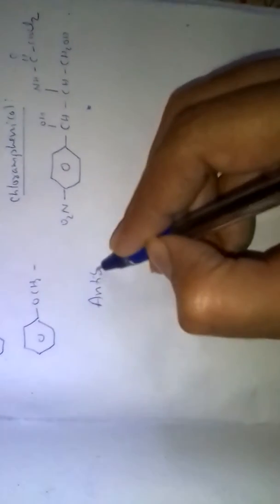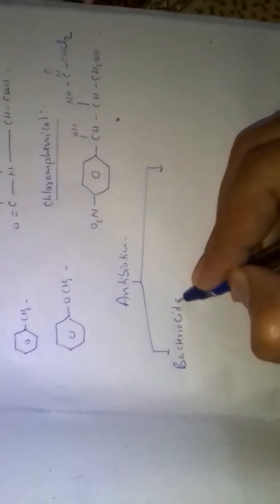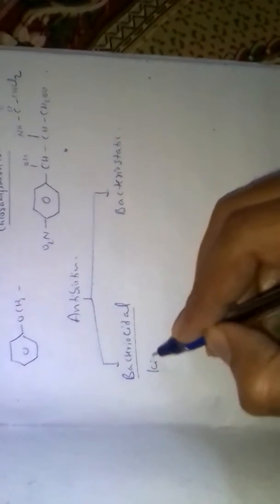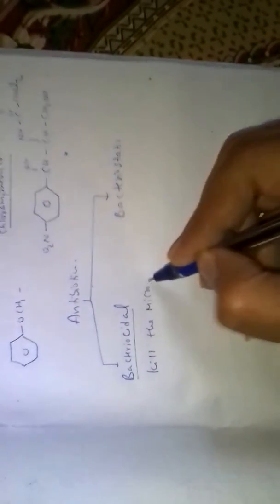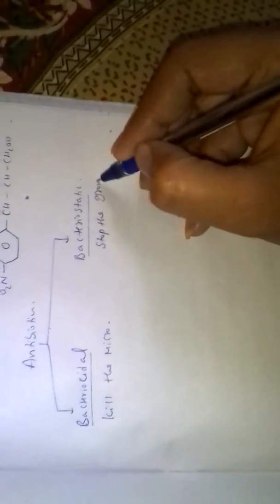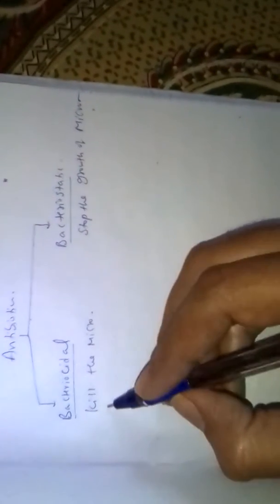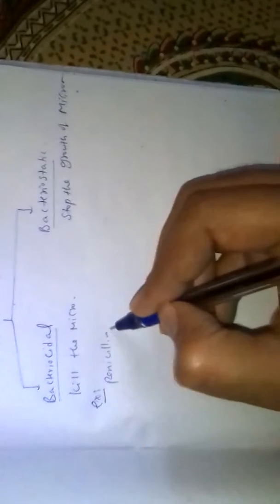Antibiotics are of two types: bactericidal and bacteriostatic. Bactericidal means they kill microorganisms directly. Bacteriostatic means they stop the growth of microorganisms. Examples of bactericidal antibiotics include penicillin and aminoglycosides.